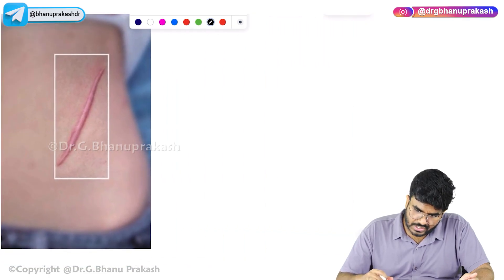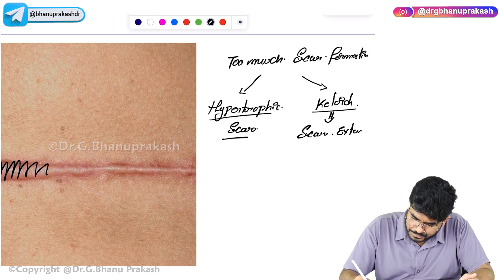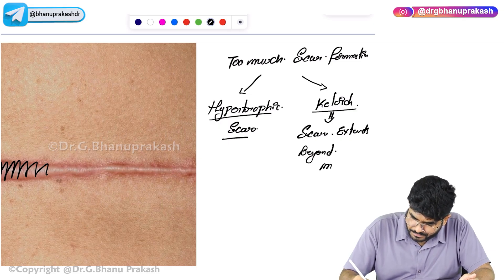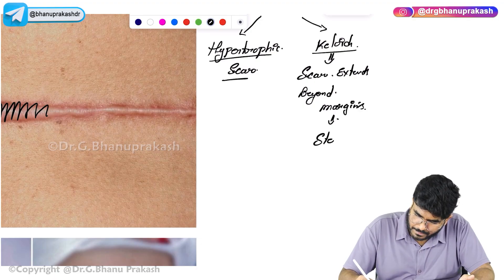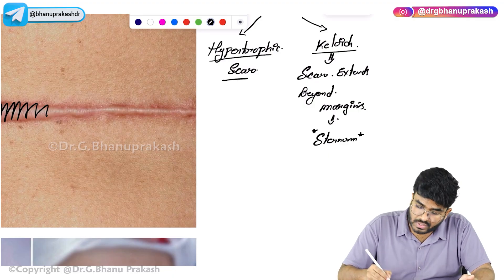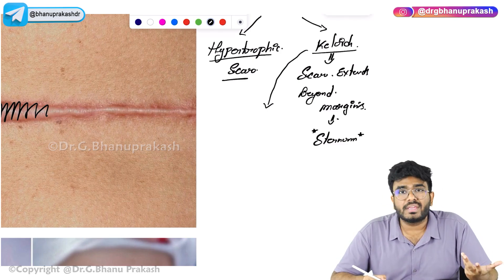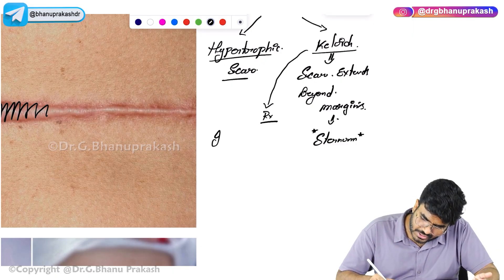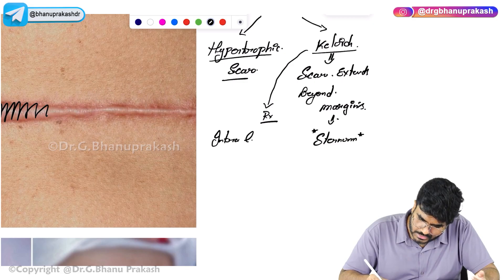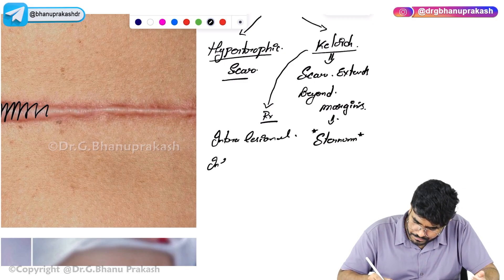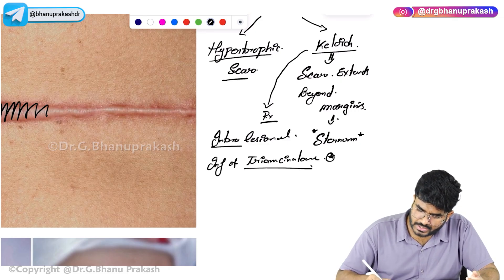For your exam: keloid is a scar where the scar tissue extends beyond margins. The most common site for keloid is the sternum. Hypertrophic scars are okay cosmetically, but keloids are not cosmetically good. The treatment for keloid is intralesional injection of triamcinolone — injecting into the keloid itself.